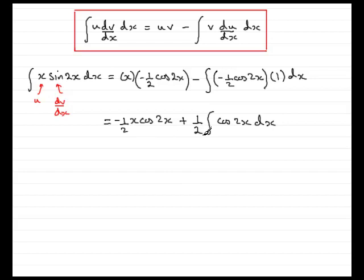Now all I need to do is work out this integral on the end here. So I'm just going to copy the first term back down again as minus a half x cos 2x. And then we have the plus a half, and the integral of cos 2x is a half sine 2x.